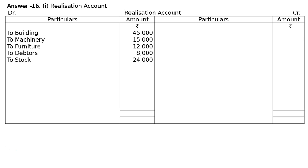On the credit side we will have Creditors Rs. 14,000. After writing 'By Creditors' you will get down to receipts — that is, By Bale's Loan Account Rs. 500. We can analyze there is Bale's loan account; it is a partnership firm being dissolved. Bale's loan is Rs. 3,000. Bale agreed to accept Rs. 2,500 in full settlement of his loan account. Hence, By Bale's Loan Account Rs. 500 will be in the realization account, and Rs. 2,500 will be in the bank account. This 500 will be there in the realization account as a profit on the loan settlement.